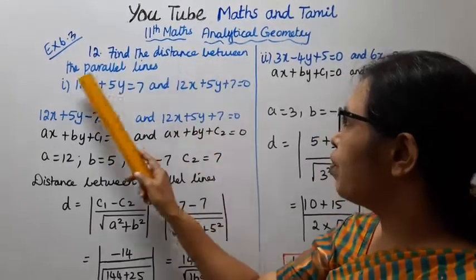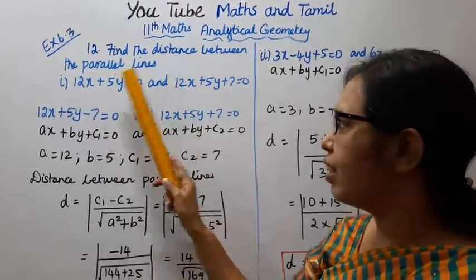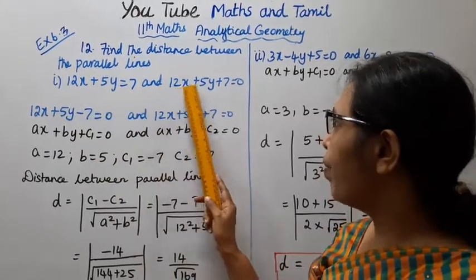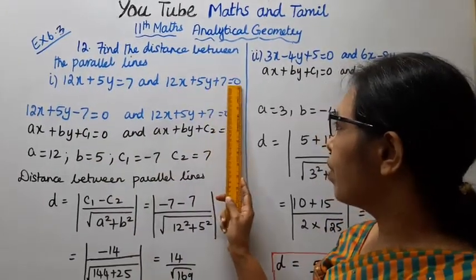Find the distance between parallel lines. First subdivision: 12x plus 5y equal to 7 and 12x plus 5y plus 7 equal to 0.